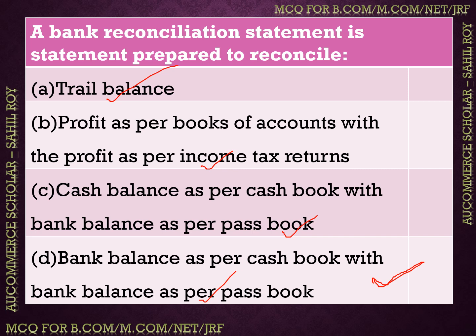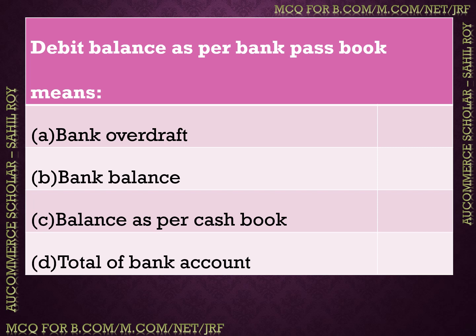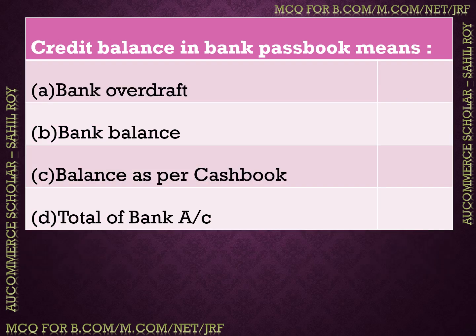Next question: debit balance as per bank passbook means — options: (A) bank overdraft, (B) bank balance, (C) balance as per cash book, (D) total of bank account. The correct answer is option A — bank overdraft. A debit balance as per bank passbook means bank overdraft.